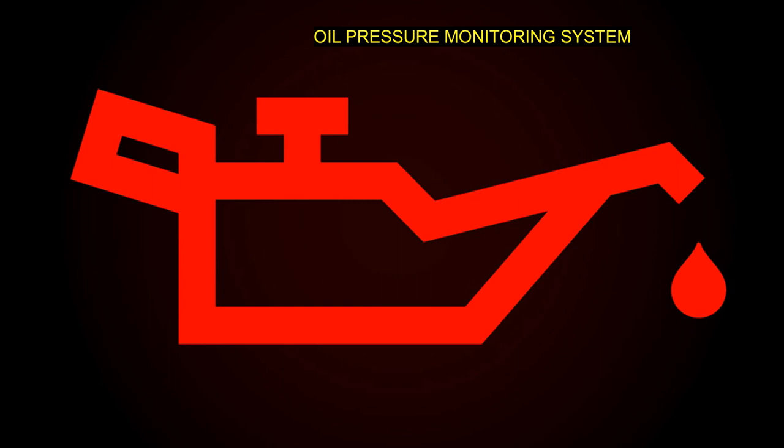The fog light indicator — when the fog lamp is on, the fog lamp indicator will show. This is the sign of the light. This is the oil pressure monitor system.